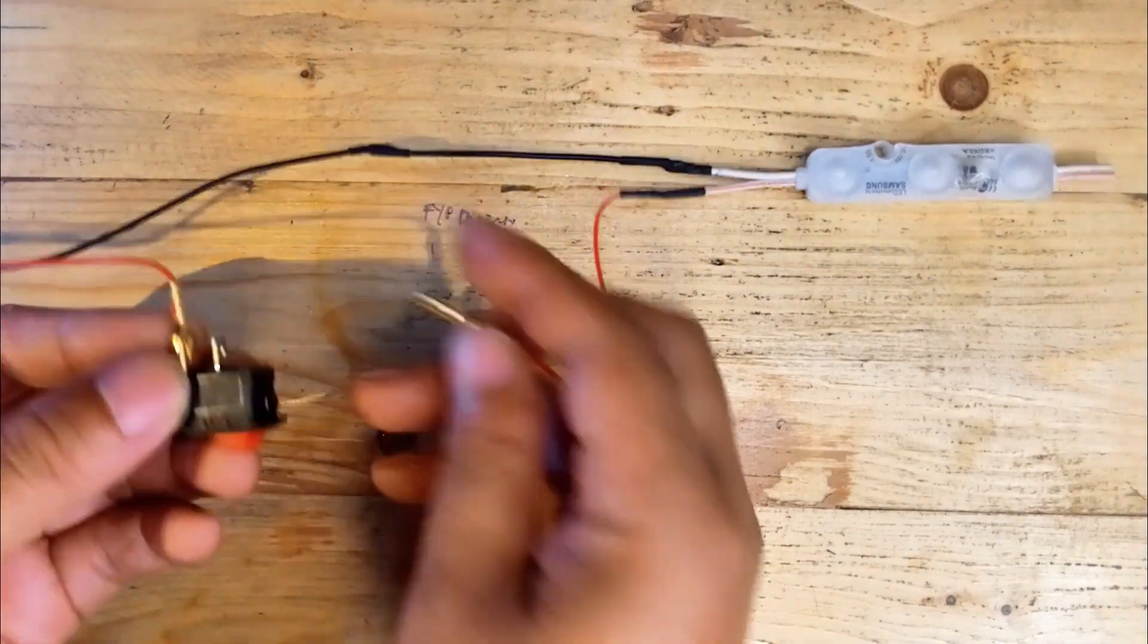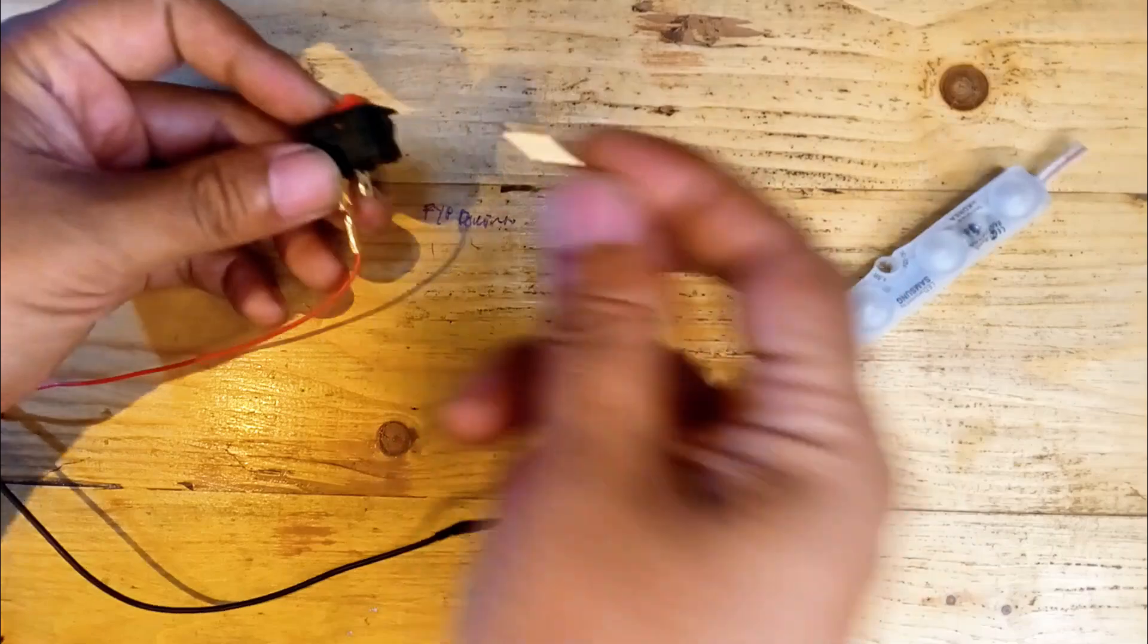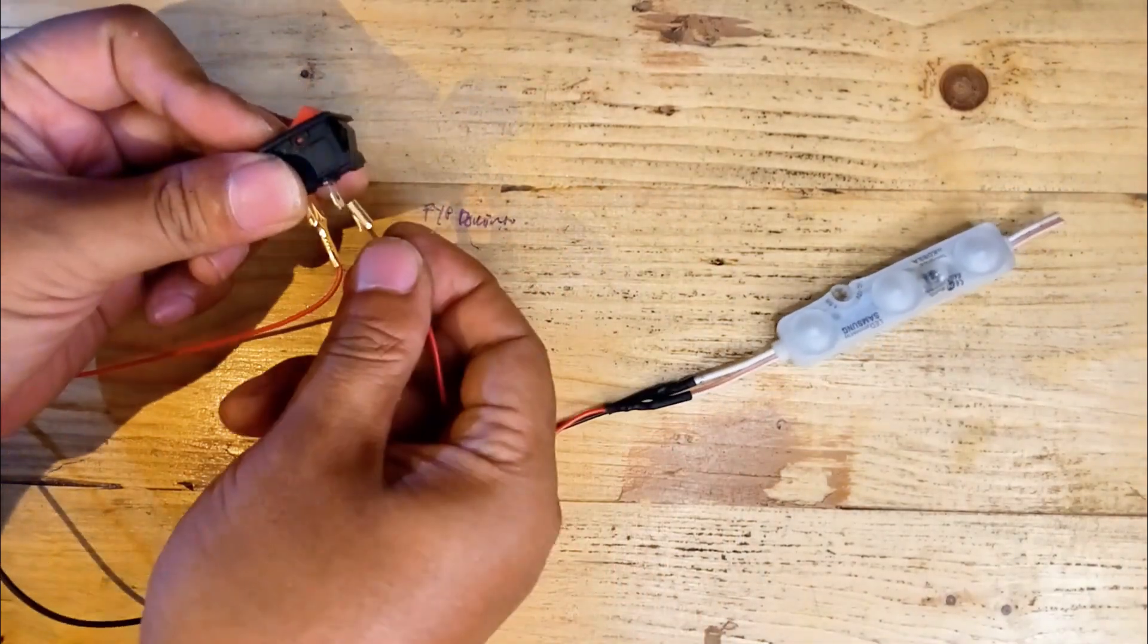Next I'll connect the other terminal of the switch to the positive terminal of the LED light using another red wire.